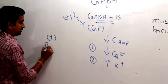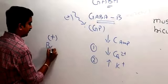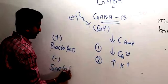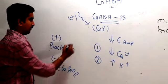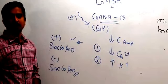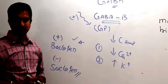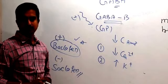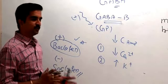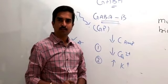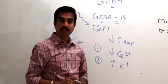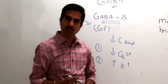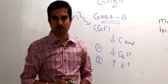Both GABA-A and GABA-B receptors ultimately result in membrane hyperpolarization, but through different modes of action. The main agonist for GABA-B receptors is the muscle relaxant baclofen, and the antagonist is saclofen, which is not yet in clinical use.